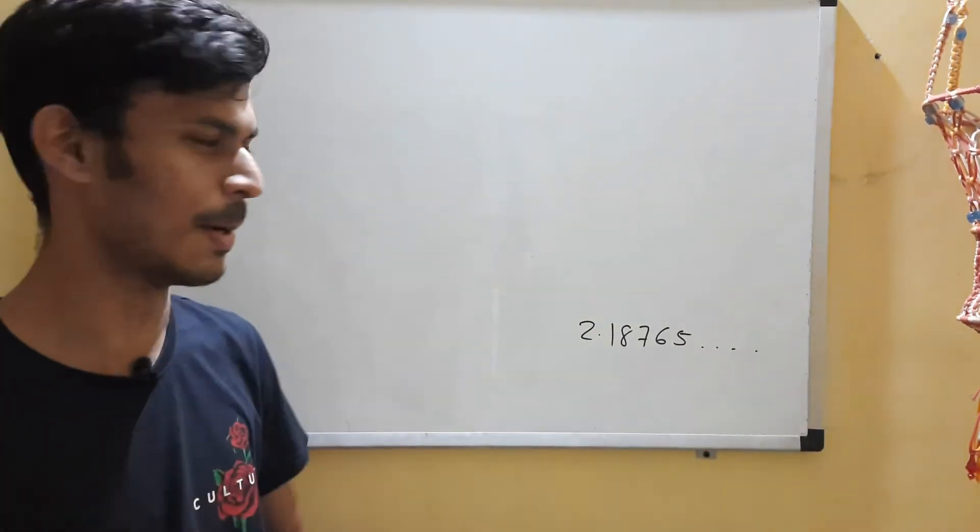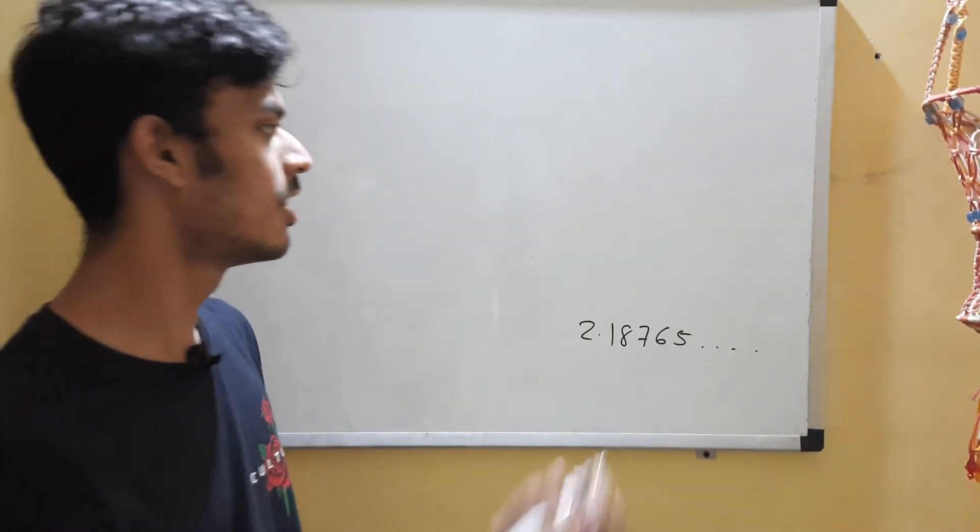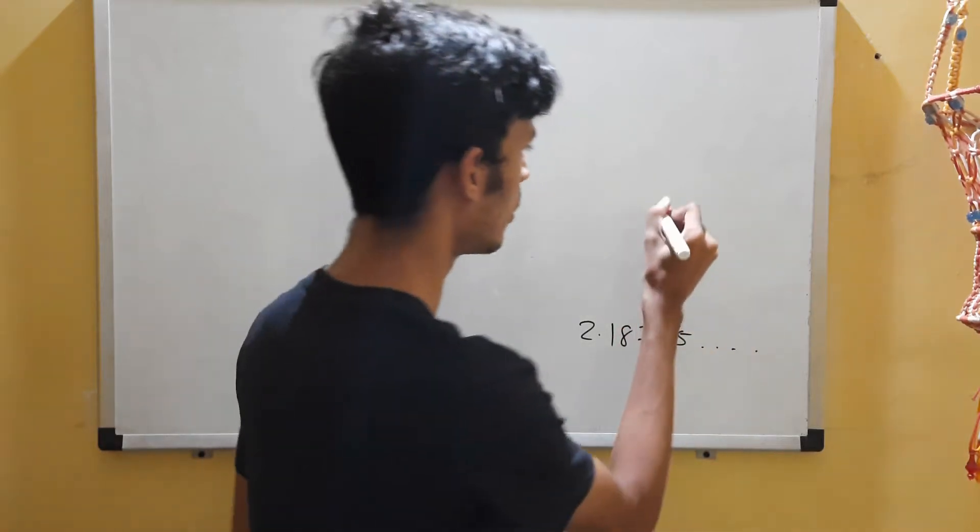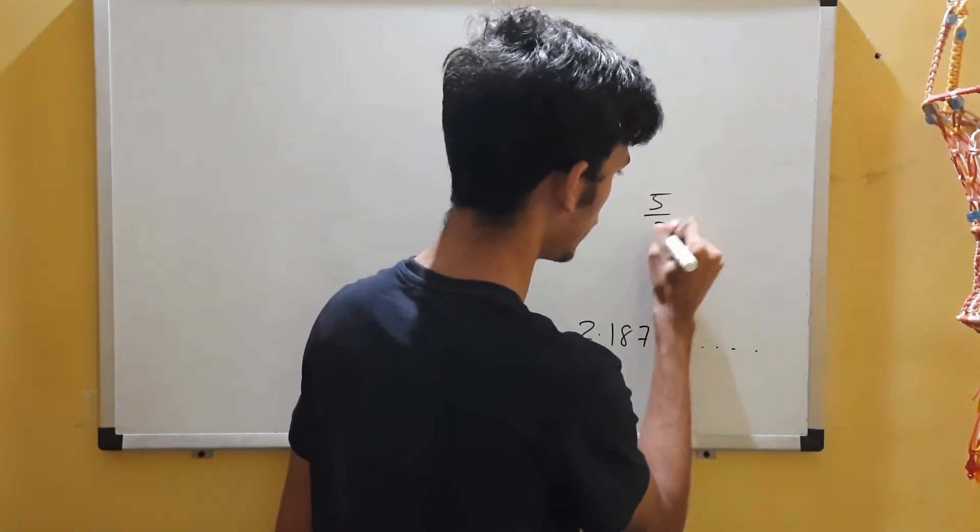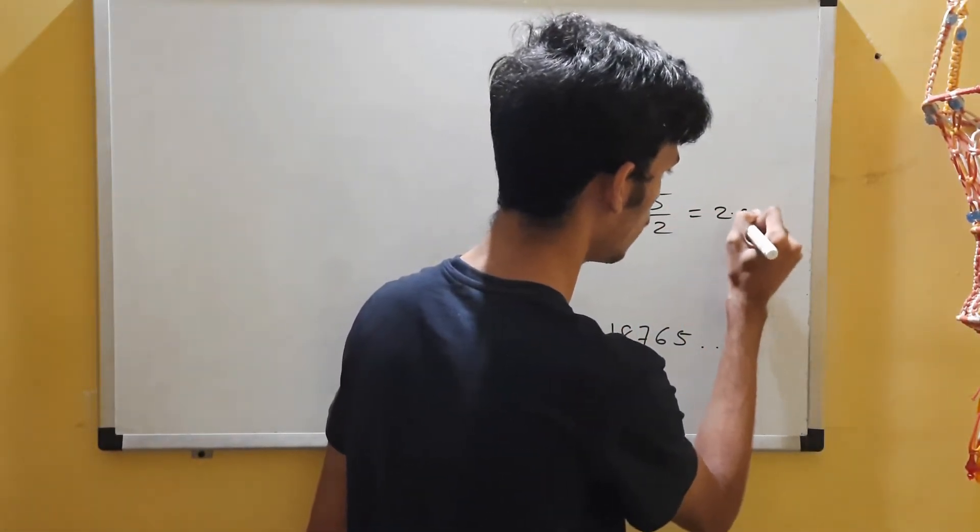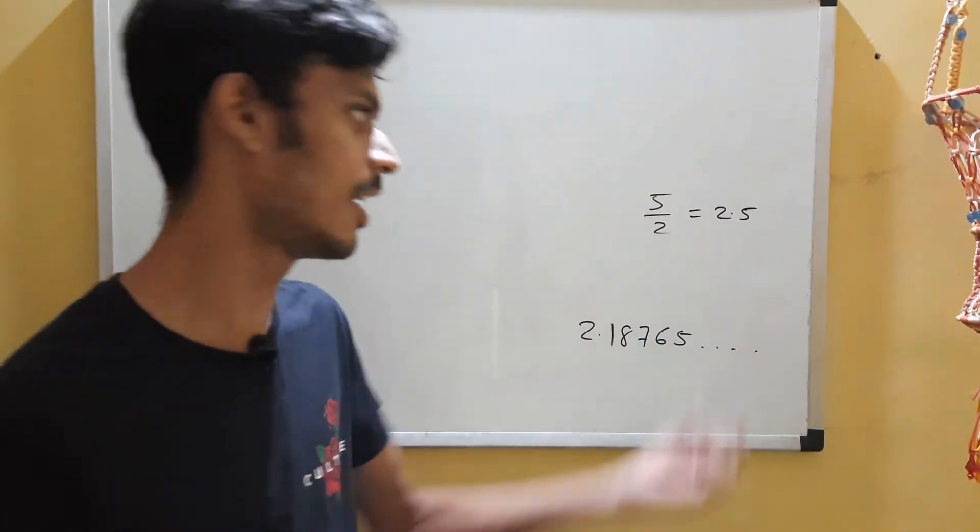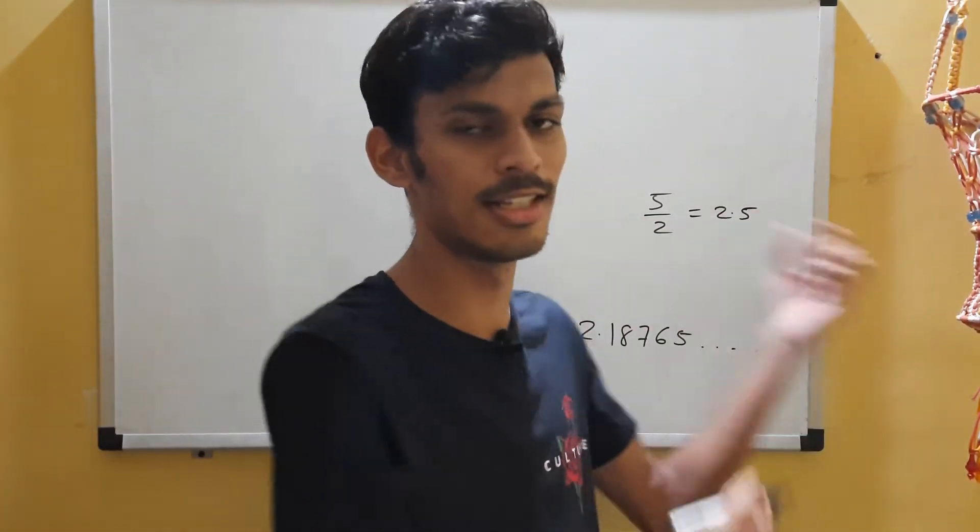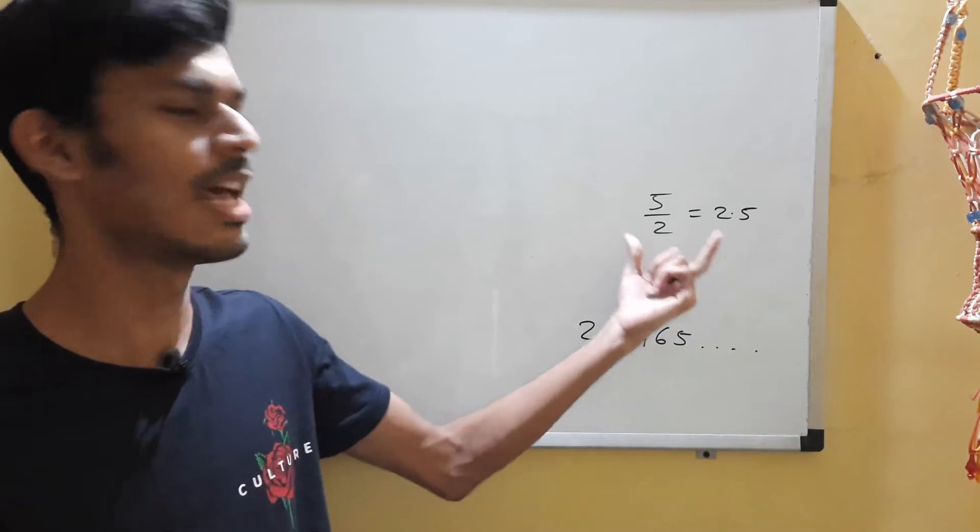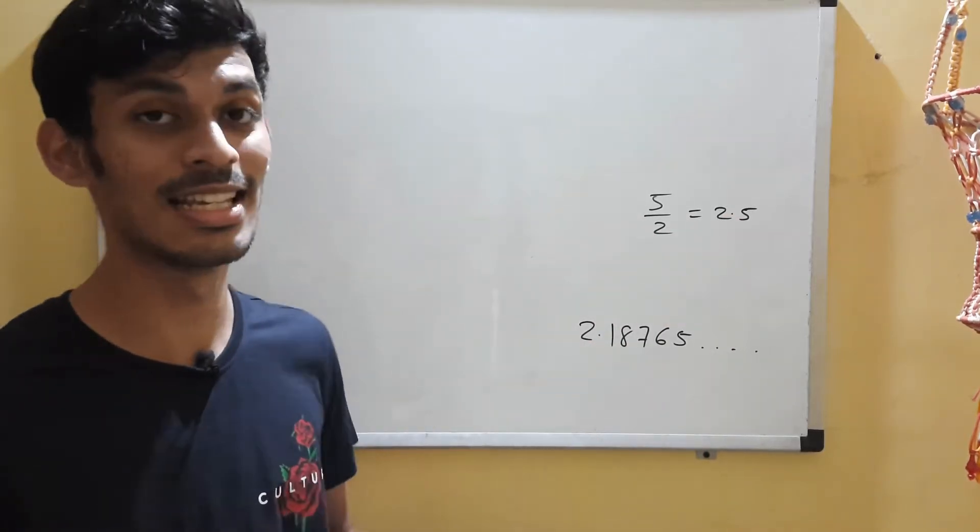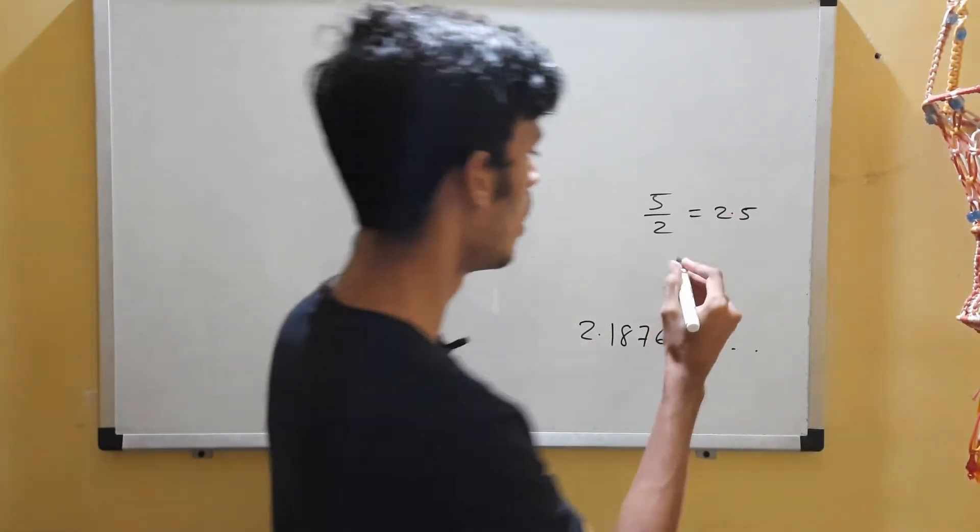Whereas rational numbers are those numbers which either terminate - like the fraction 5 by 2, which has a value 2.5. This terminates; the decimal places do not go on and on, so it's a rational number.